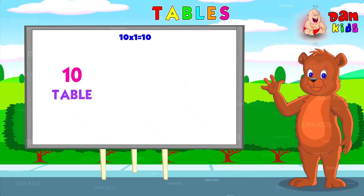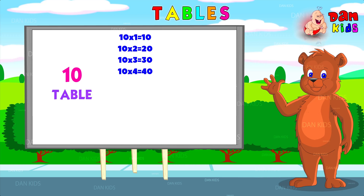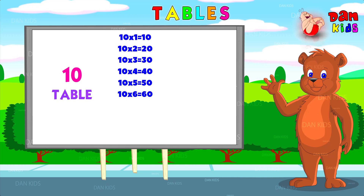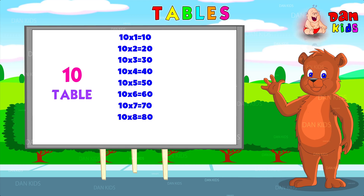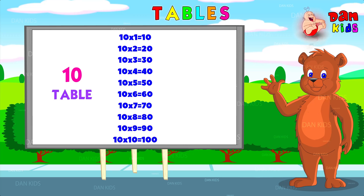Ten ones are ten. Ten twos are twenty. Ten threes are thirty. Ten fours are forty. Ten fives are fifty. Ten sixes are sixty. Ten sevens are seventy. Ten eights are eighty. Ten nines are ninety. Ten tens are one hundred.